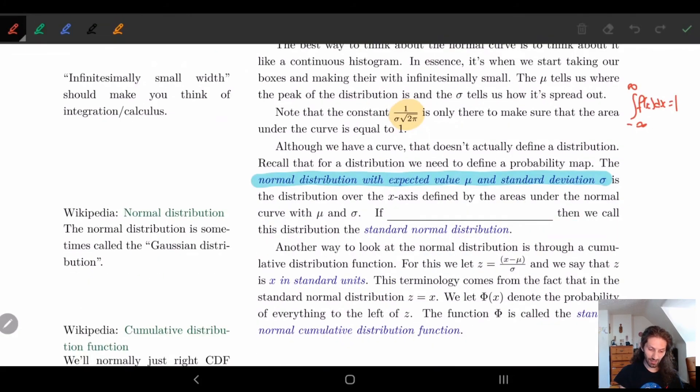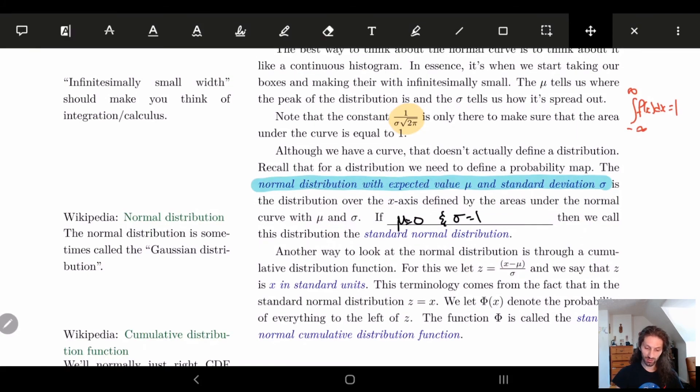Now, there's a standard way of kind of doing this. So when mu is equal to zero and sigma is equal to one, then we call this the standard normal distribution.